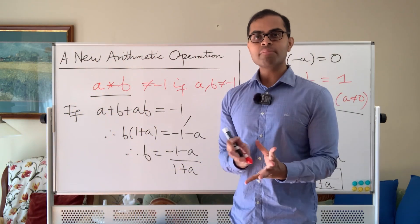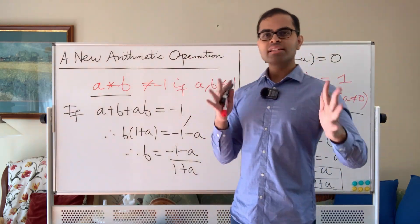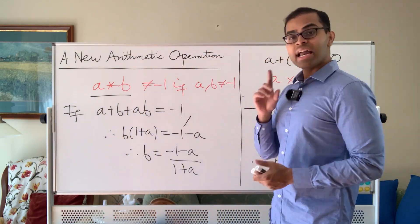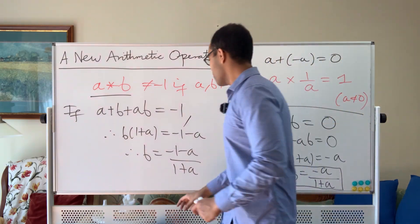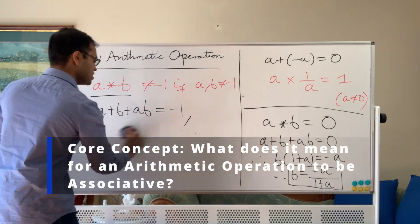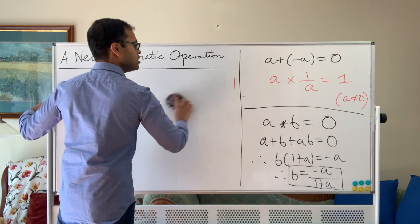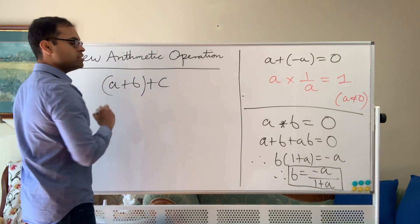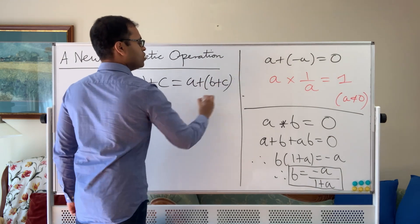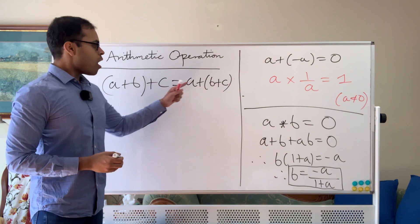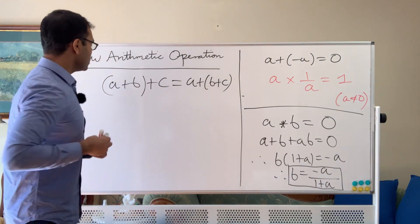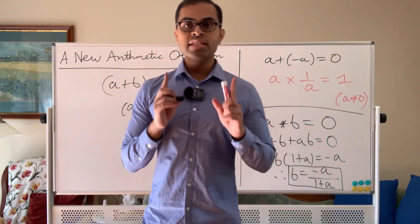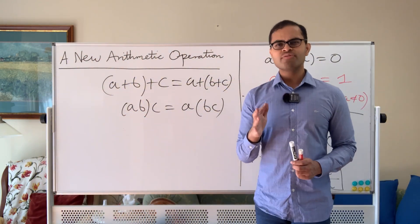So this operation satisfies all the same properties that addition and multiplication formally satisfy. Just because it looks different doesn't mean it's not a valid operation. Here's the third property, which is associativity — something we take for granted when we study addition and multiplication, but it's crucial when composing many numbers. The property is that if we add a and b first then add c, it's the same as adding b and c first then adding a. So if you're adding three numbers, the grouping doesn't matter. Similarly for multiplication. This is what is called associativity, and it's actually satisfied for this star operation.